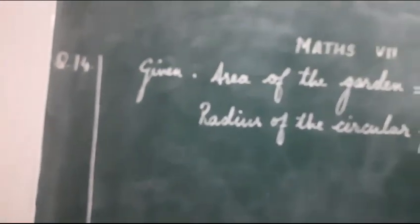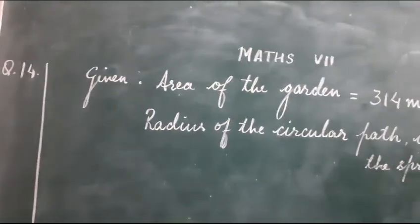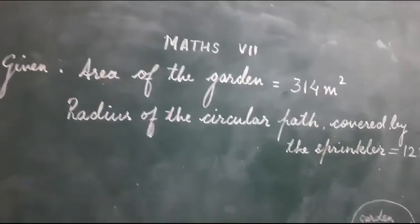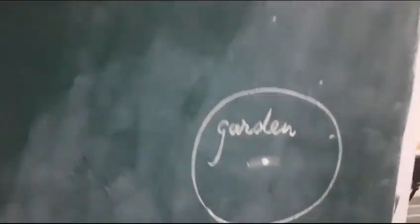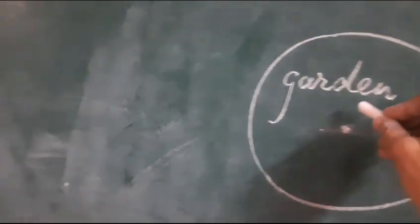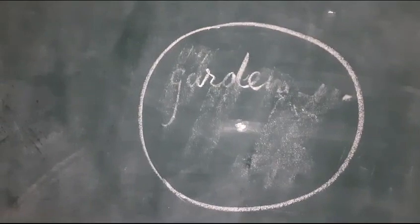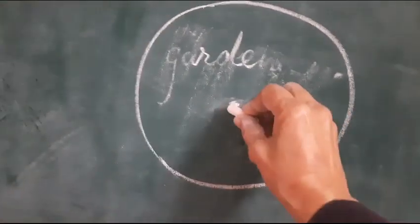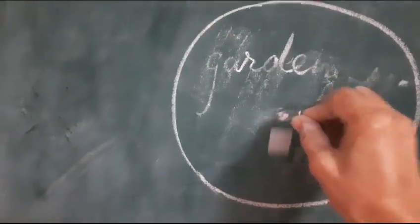This question is very easy. What is given? The area of the garden. I have drawn a small picture. This is the garden, the flower garden, and its area is given. It is saying that a sprinkler is placed at the center of the garden.